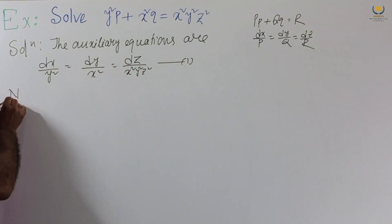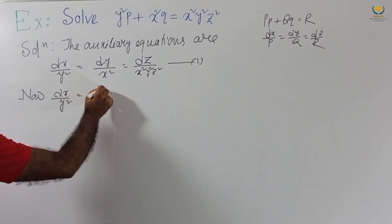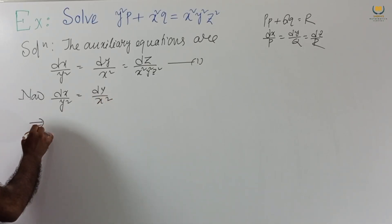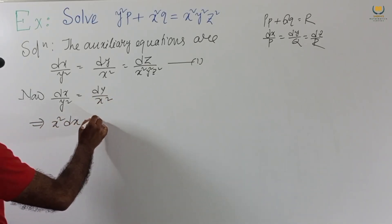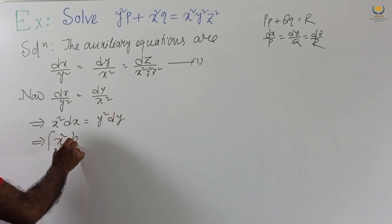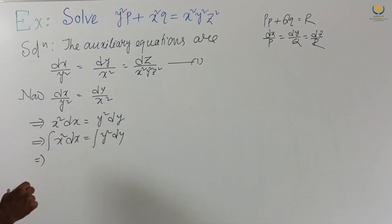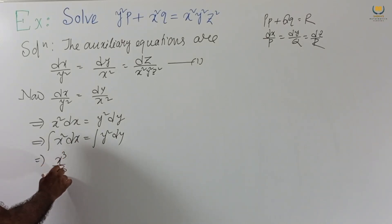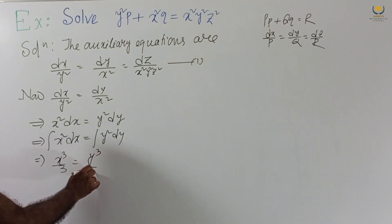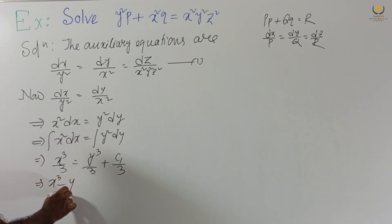First, consider the first two pairs: DX by Y² equal to DY by X². Cross-multiplying gives X² DX equal to Y² DY. Integrating, we get X³/3 equal to Y³/3 plus C1/3, so X³ minus Y³ equal to C1. We get the first solution.